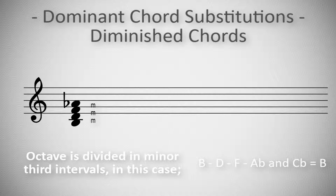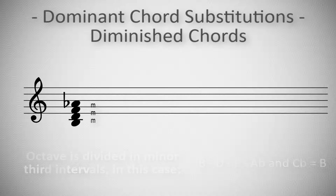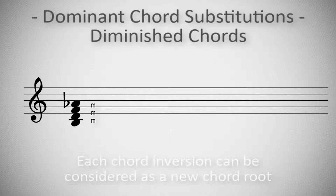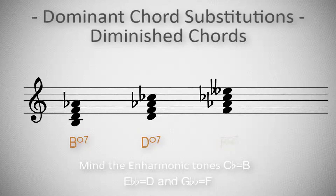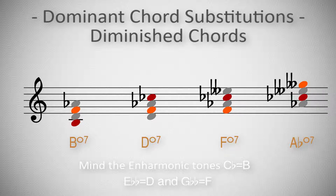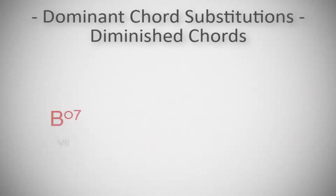This means that the same B diminished 7th chord can be inverted fourfold, with each inversion being the fundamental or tonic of a new diminished 7th chord. Because all of these chords share the same tritone, they can all replace the dominant 7th chord in its function.